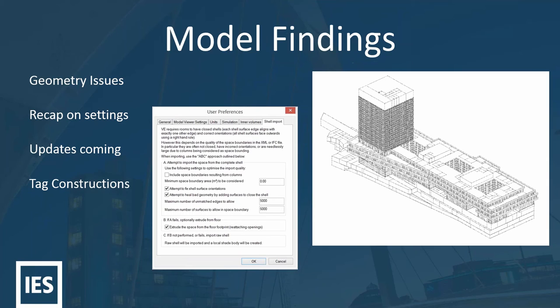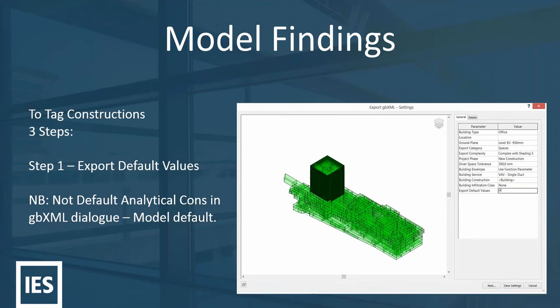The next key finding: one of our clients came to us and wanted to find out if they could tag constructions. They weren't actually wanting any data across with that, but they just wanted to be able to find the construction easily once it transferred to the virtual environment. You can see the image of the model they were working with — it's a sizeable model, about 2000 zones. For them to go back and try to assign different constructions internally would have taken a long time, rather than just tagging that information. In this case it was a Revit model. I'll run through the steps in slides and then go through a demo.